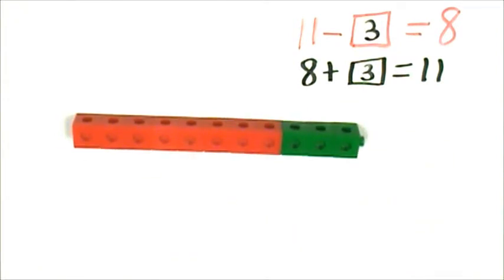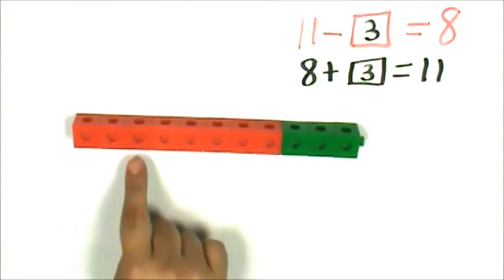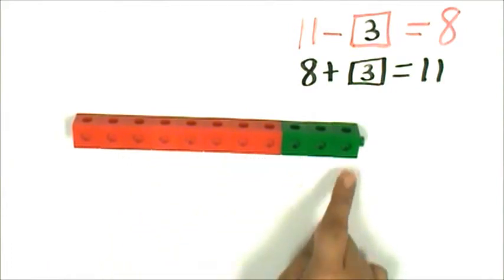I can verify my answer by looking at my train. My train has 11 connecting cubes: 1, 2, 3, 4, 5, 6, 7, 8, 9, 10, 11.